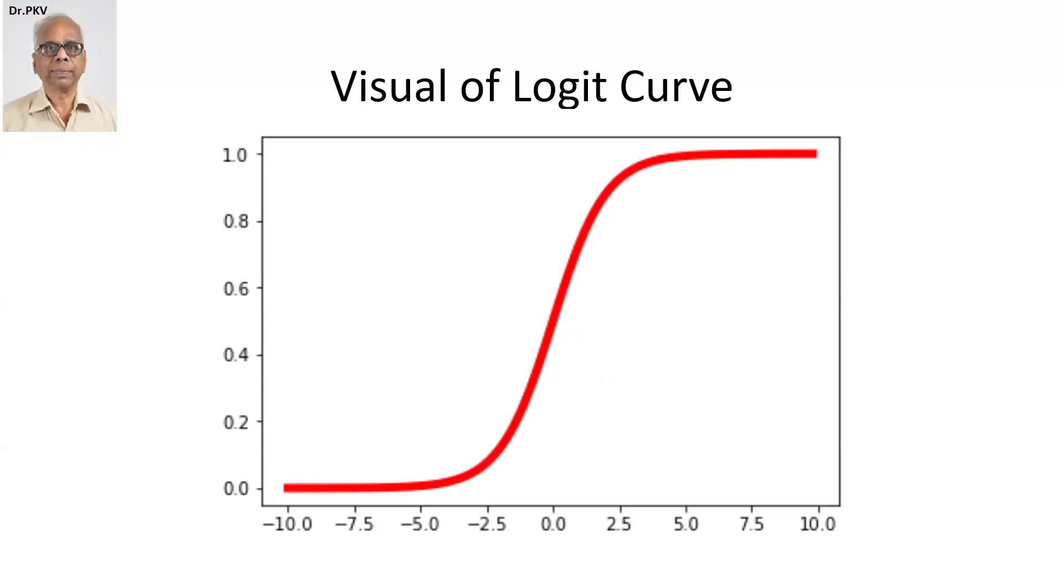First of all, we told earlier logistic regression guarantees the probability to remain between 0 and 1 and thus overcomes the deficiency of the ordinary least-square regression model. So, what I'm going to do here is look at the picture. In this picture, you will be able to understand that the curve is an S-shaped curve. The horizontal axis represents the ordinate Z and the vertical axis represents the probability of Z for various values of Z.